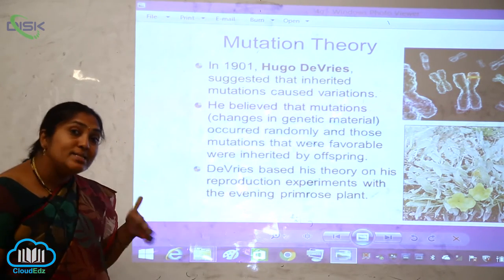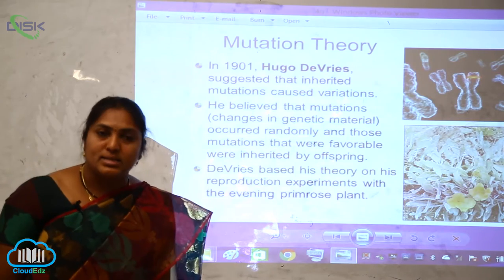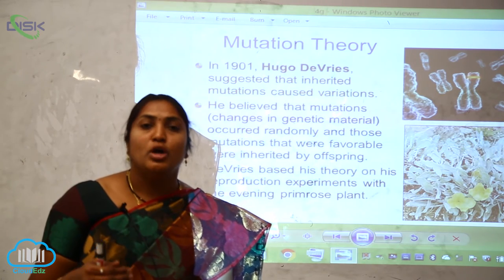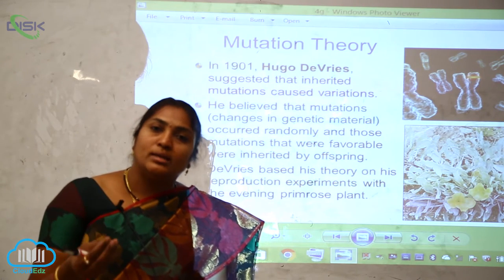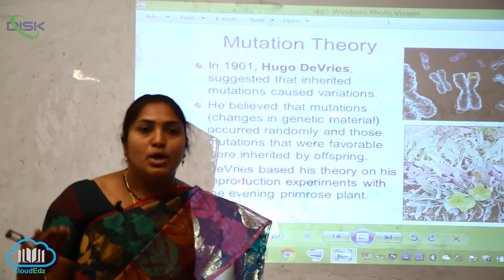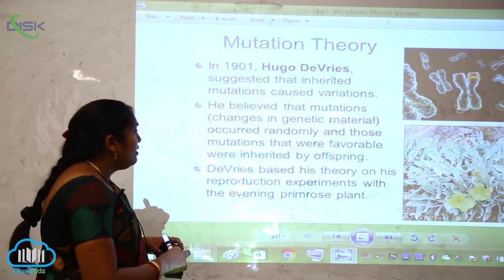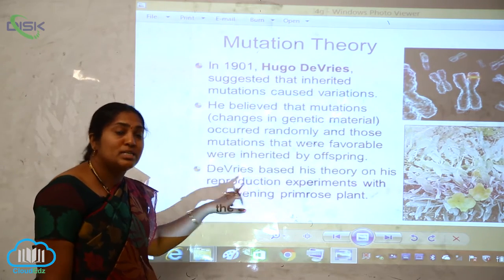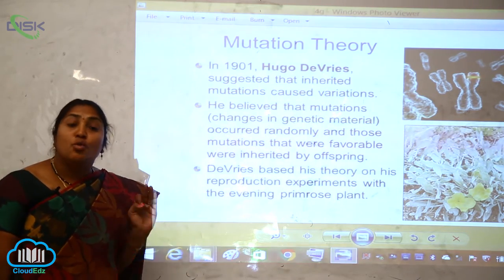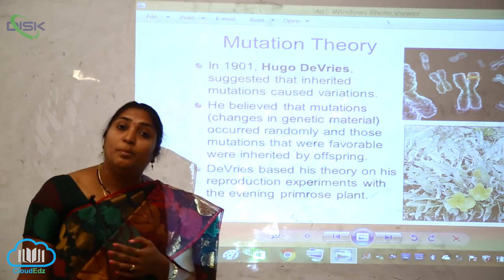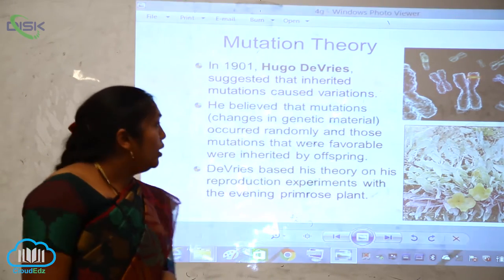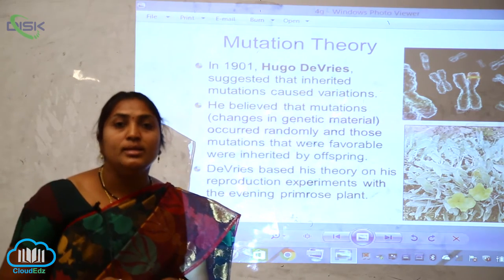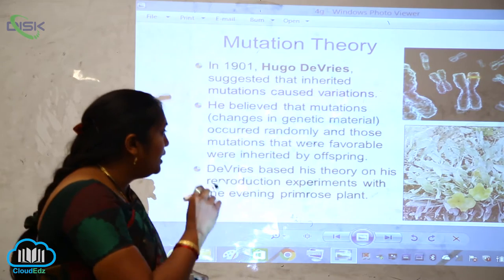Hugo de Vries believed that mutations change the genetic material, and through this process a new character evolves. When a new character evolves, a new species comes into existence. He based this theory on reproduction experiments with the evening primrose, building on what had been postulated by Darwin.